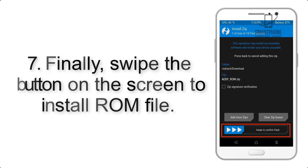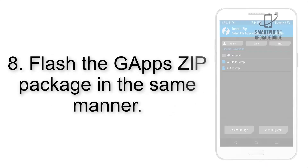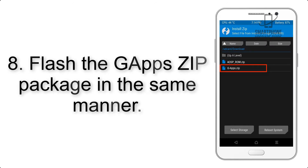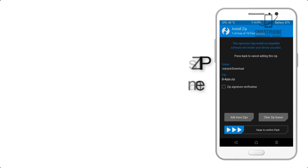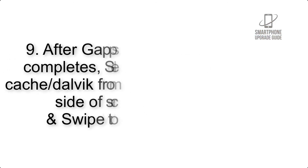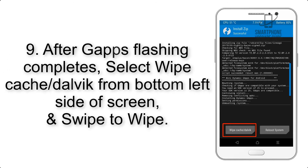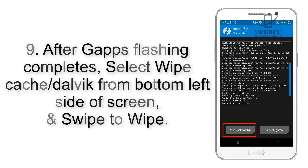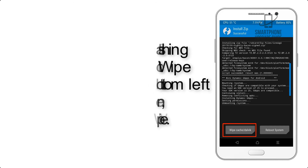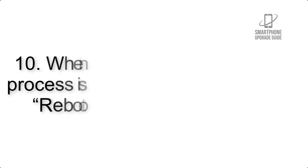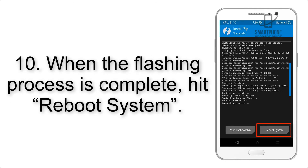Step 7: Swipe the button on the screen to install the ROM file. Step 8: Flash the GApps zip package in the same manner. Step 9: After GApps flashing completes, select Wipe Cache and Dalvik from the bottom left side of the screen and swipe to wipe.